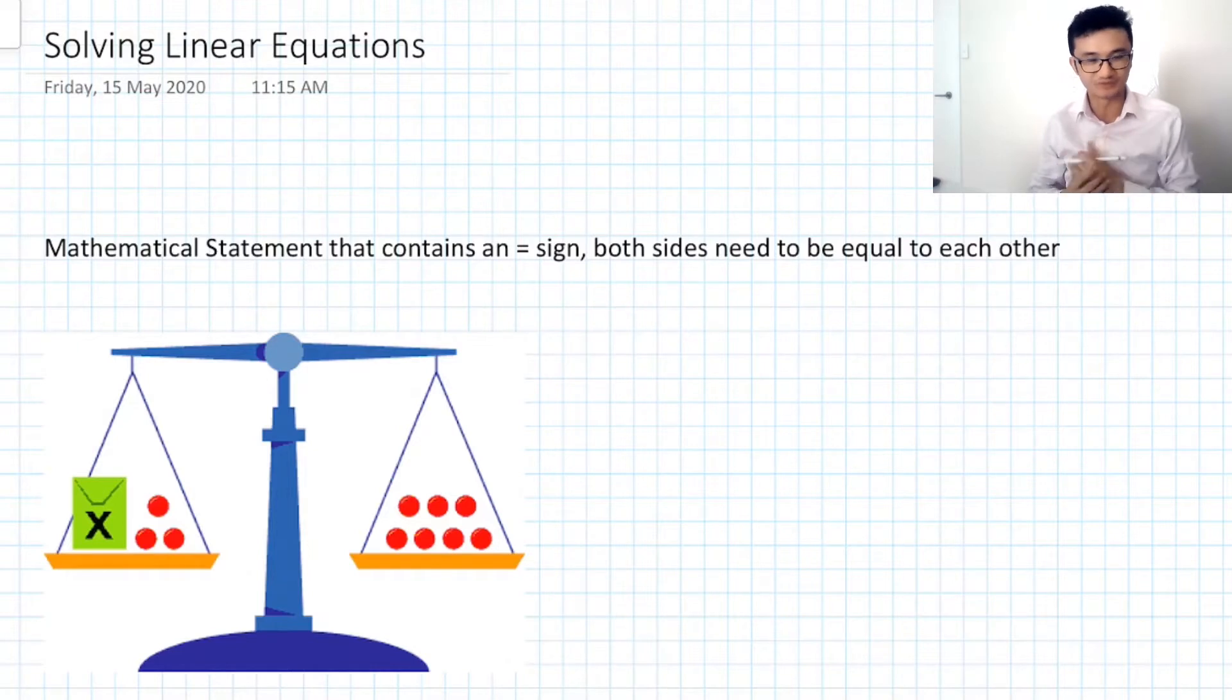Basically an equation is a mathematical statement that contains an equal sign and both sides need to be equal to each other. Now when two things are equal to each other it doesn't mean they necessarily look the same. Let me give you an example. If we have our basic equation 1 + 1 = 2, this is a true statement. But obviously 1 + 1 looks slightly different to 2 but mathematically they're the same.